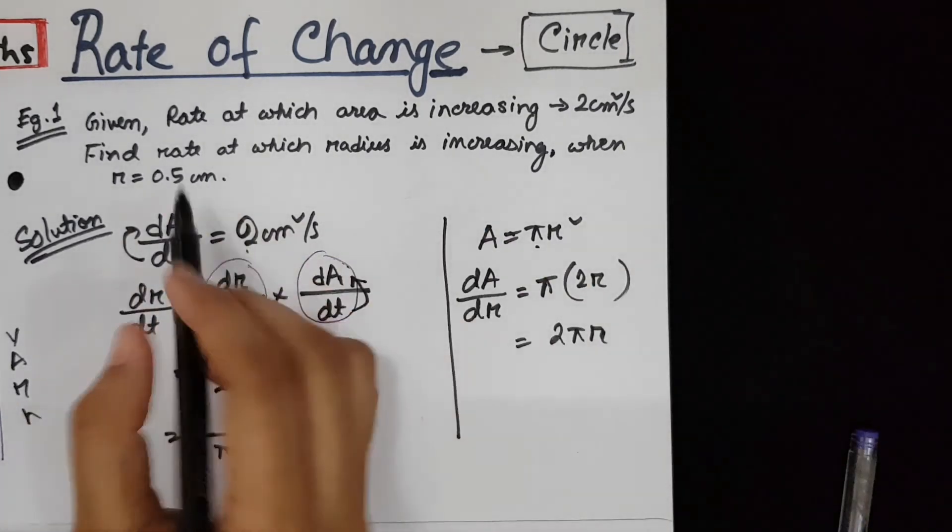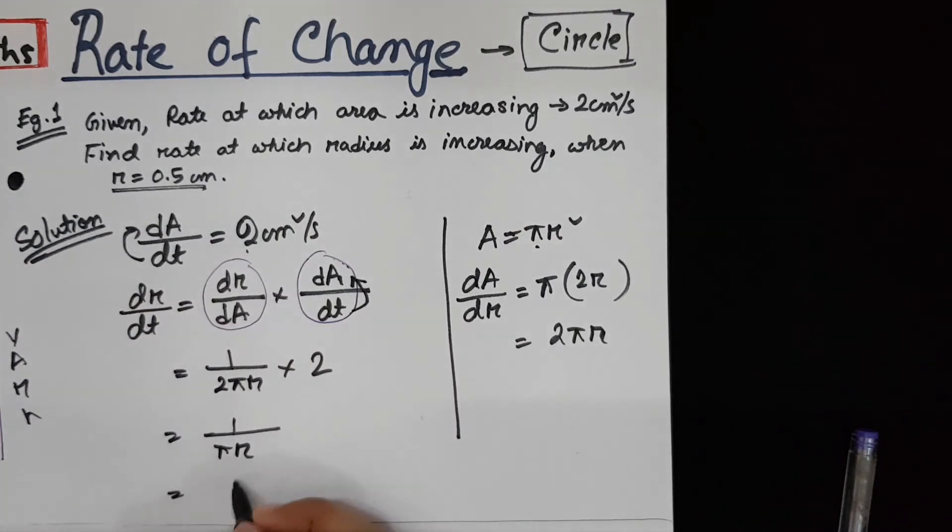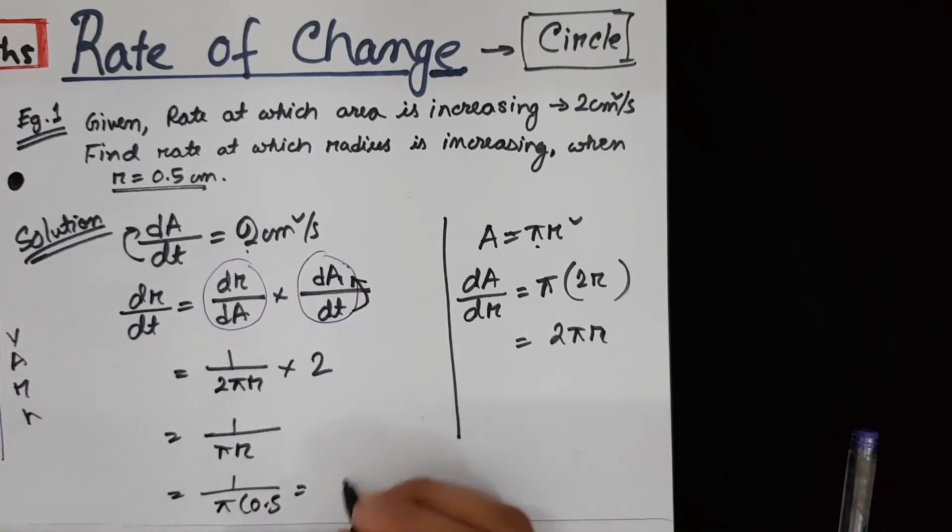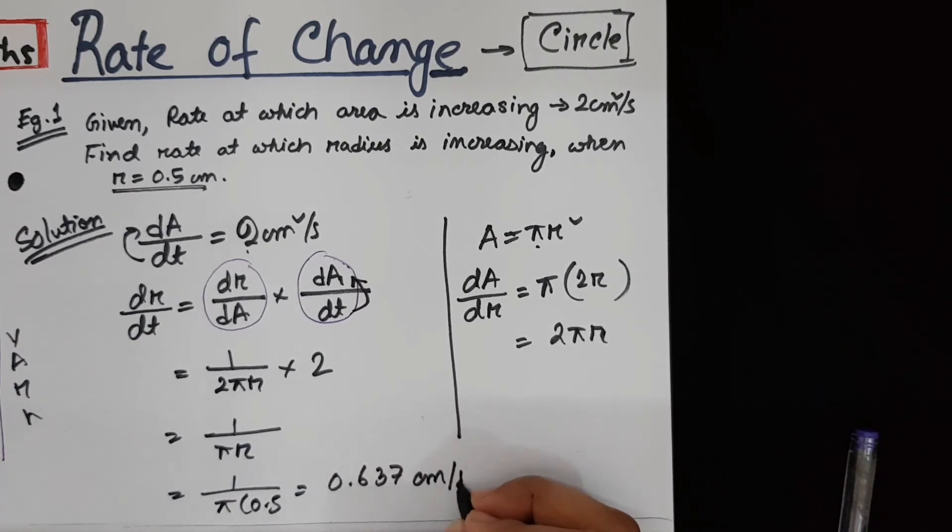So in this case, radius is 0.5. So π times 0.5. So the answer becomes 0.637 centimeter per second.